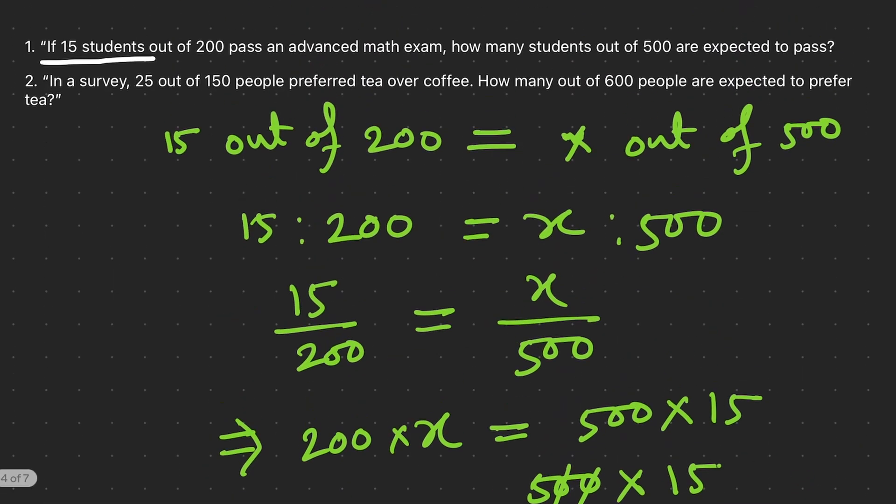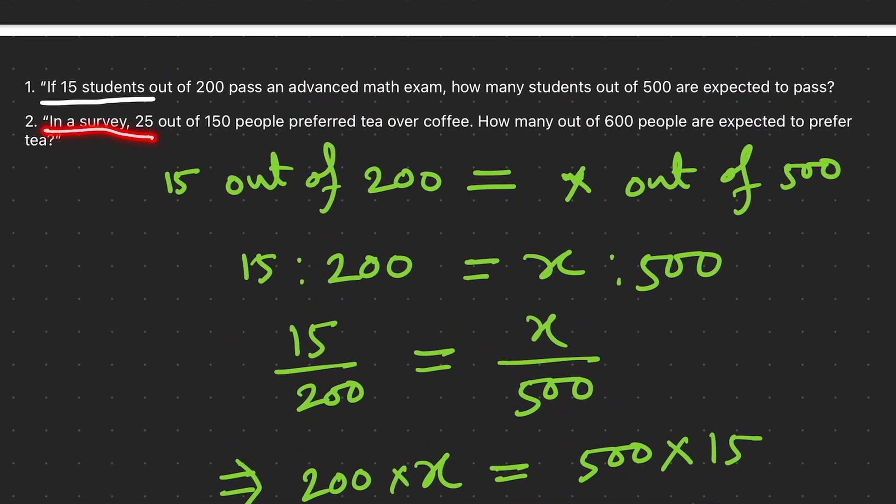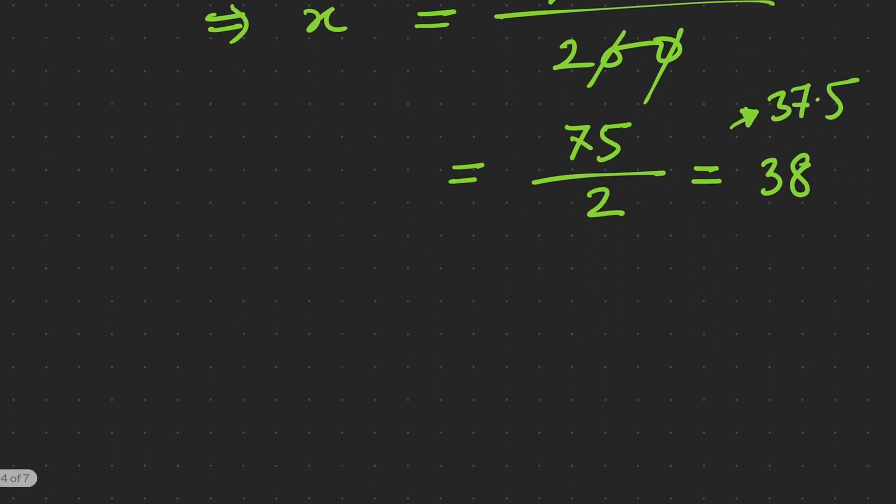Next question: In a survey, 25 out of 150 people prefer tea over coffee. How many out of 600 people are expected to prefer tea? Similarly, we can solve this problem.